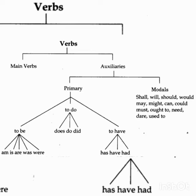The primary auxiliaries are: am, is, are, was, were, do, does, did, has, have, had. The modals are: can, could, shall, should, will, would, may, might, must, ought to, need, dare, used to. All together there are 24 auxiliaries in the English language.